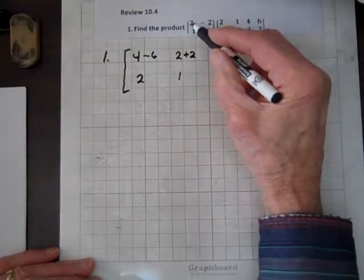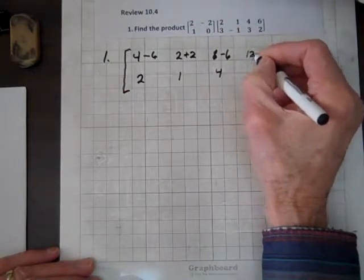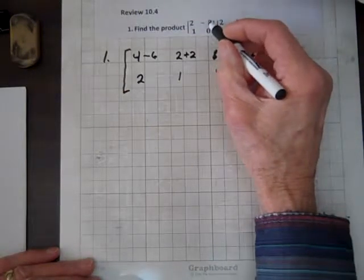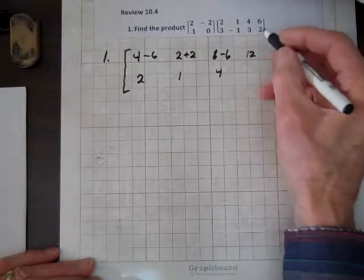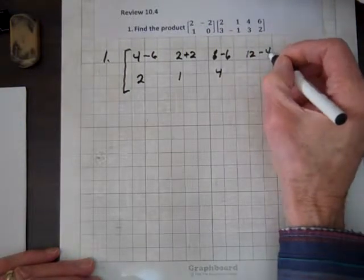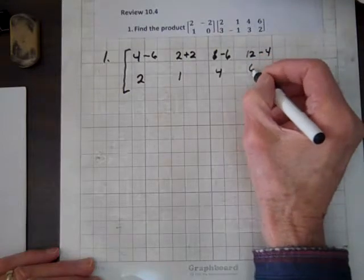And finally, 2 times 6 is 12, and minus 2 times 2 is negative 4, and 1 times 6 is 6.